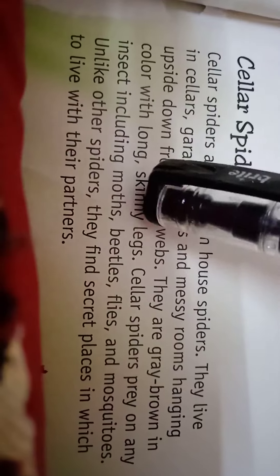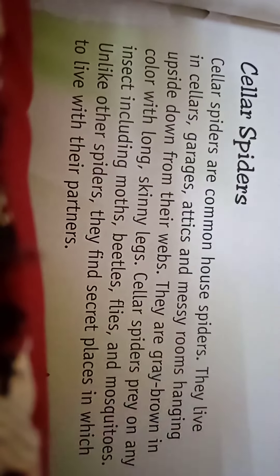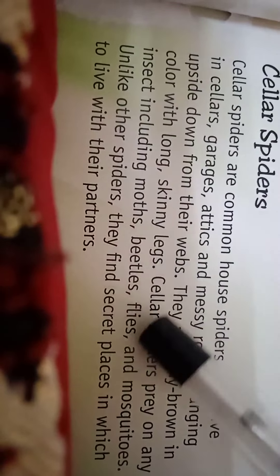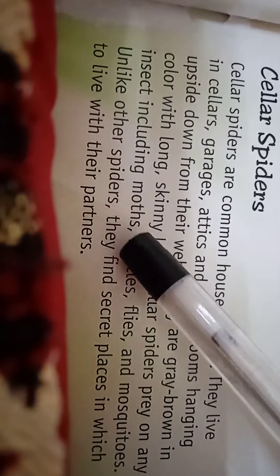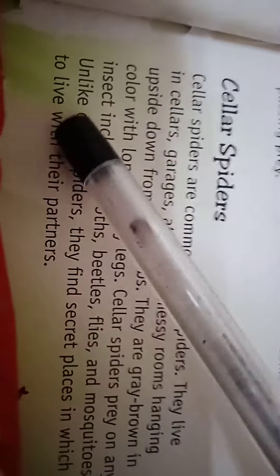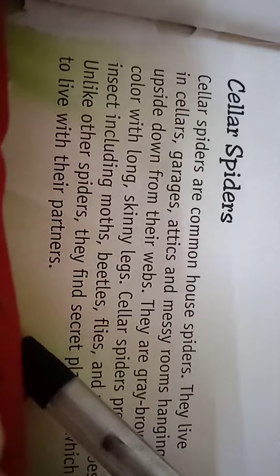Cellar Spiders are common house spiders. They live in corners, crevices, and rooms, hanging upside down from their webs. They are crab-colored with long skinny legs. The cellar spider preys on any insects including moths, beetles, flies, and mosquitoes. Unlike other spiders, they find a secret place in which to live with their partner.